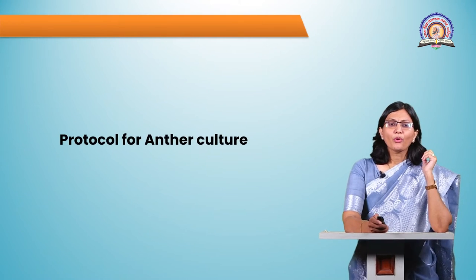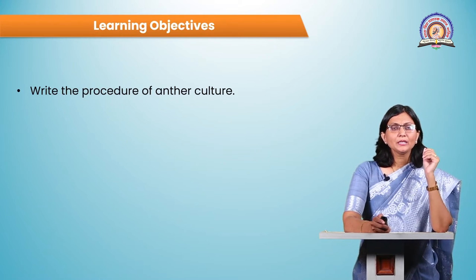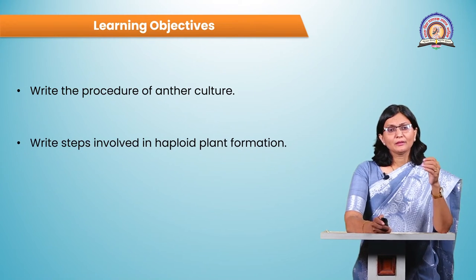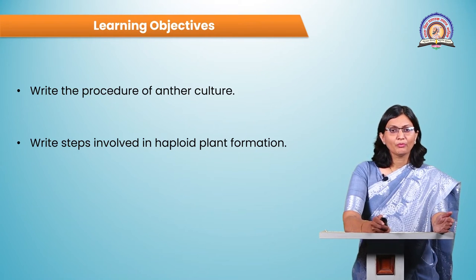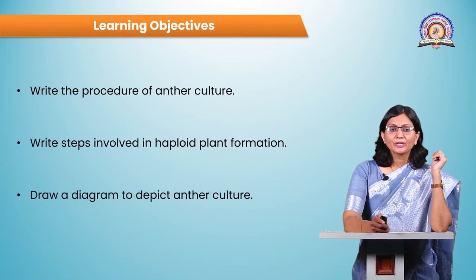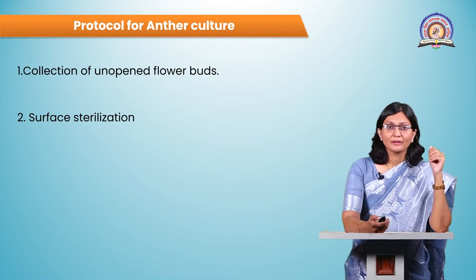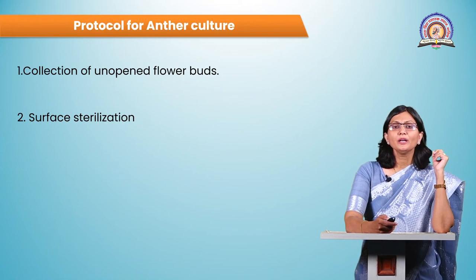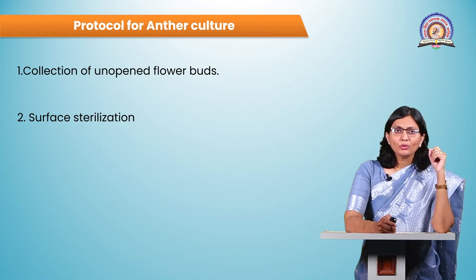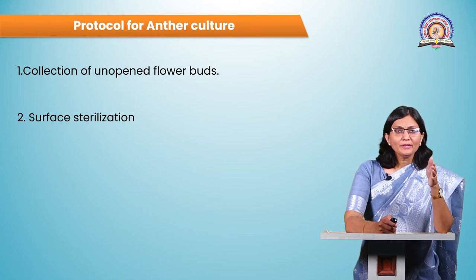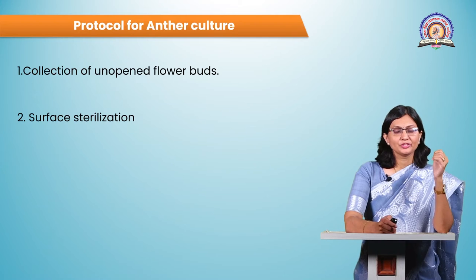Next is the protocol for anther culture. After completing this protocol, you will learn the procedure of anther culture, know the steps involved in haploid plant formation, and be able to draw a diagram depicting anther culture. The first step in the protocol is collection of unopened flower buds. We select the unopened flower bud because we want to take pollen before the dehiscence stage — at the uninucleated stage — for haploid plant generation.